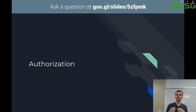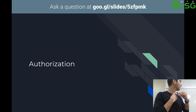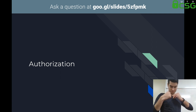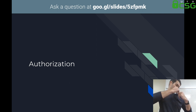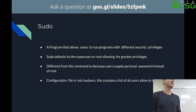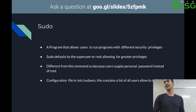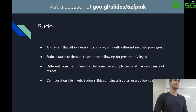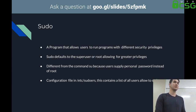Moving on to authorization — sudo. If you use a Linux system, you've most likely used sudo at some point. Most people use sudo to get to root, but sudo can do a lot more. You can use it as a logging system to check if someone added a user or ran a sudo command. If you give someone sudo privileges, you can use sudo replay to see exactly what they were doing on the box.